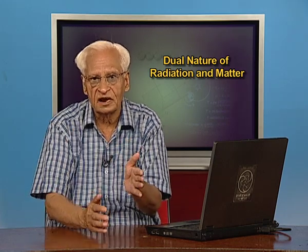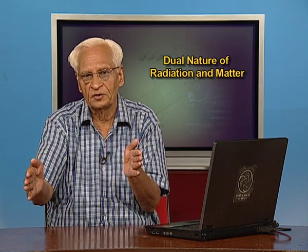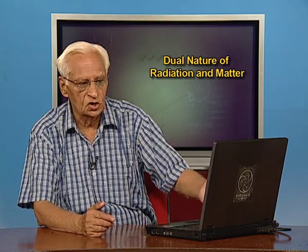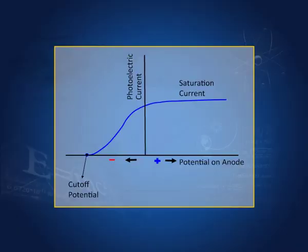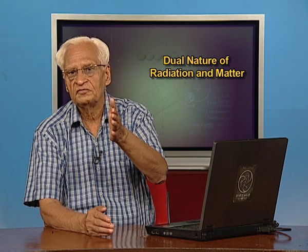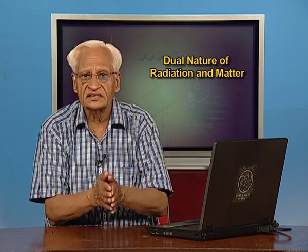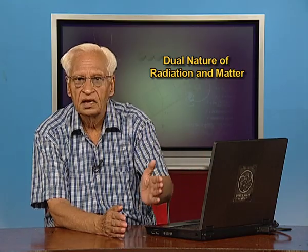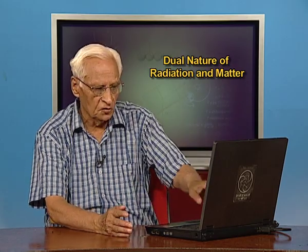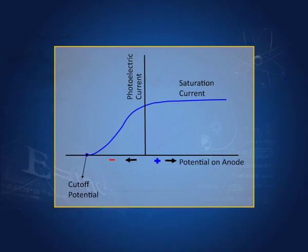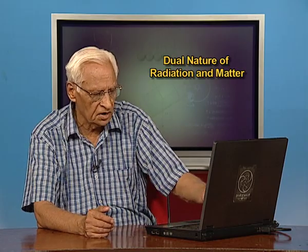This means V₀ determines the highest kinetic energy given to the photoelectrons, because at this stage even the highest-energy photoelectron cannot reach the anode. This is known as the cutoff potential or stopping potential. When the anode potential is made negative, only electrons with sufficient kinetic energy to overcome the repulsion can reach the anode. The existence of a cutoff potential implies that V₀ is a measure of the maximum kinetic energy of emitted electrons.